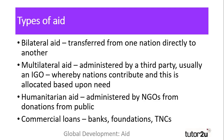A second type of aid is multilateral aid, which takes the form of payments from one nation to an administrative body, such as the IMF or the World Bank, who then distribute these revenues based upon the need of individual nations, usually those in the developing world.